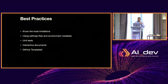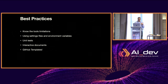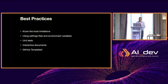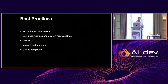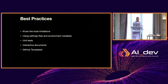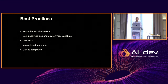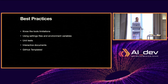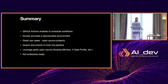To end with some best practices: know the limitations of the tools you're using. Using settings files and environment variables is critical for reproducibility — it saves time whenever you deploy to a different place. Unit tests — I cannot stress enough how important they are. Interactive documents like Quarto make debugging much more convenient. If you have something that repeats itself, create a GitHub template for your pipeline, fork it, and it saves a lot of time.